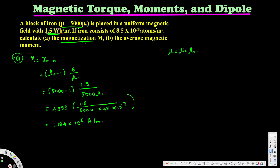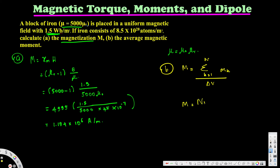Part B asks for the average magnetic moment. There is an equation relating magnetization and magnetic moment: M equals the summation of mk from k=1 to N, divided by ΔV, where mk is the magnetic moment. We already found magnetization, so assuming all mk align with the applied magnetic field, we get M equals N·mk divided by ΔV.